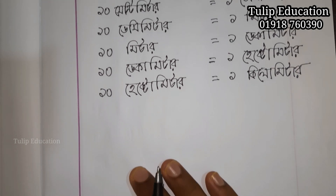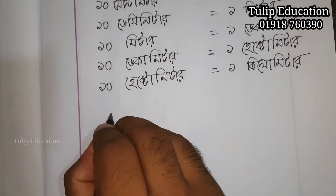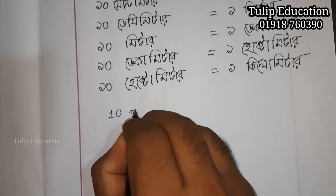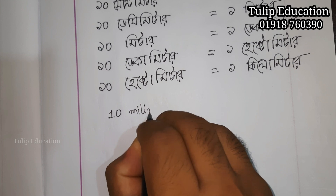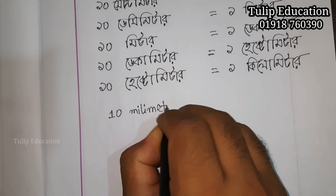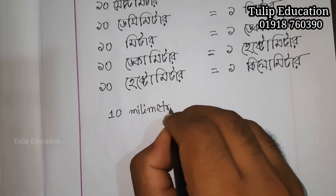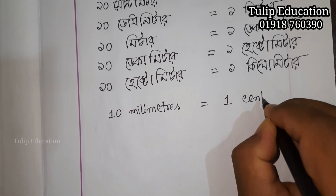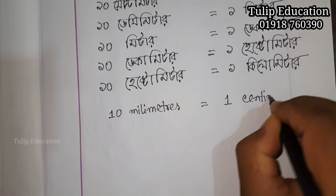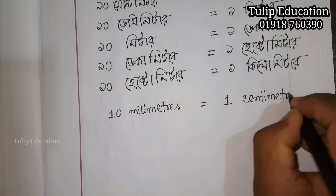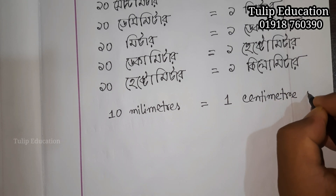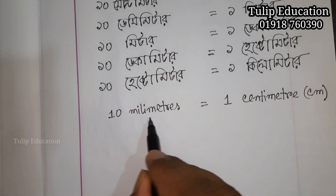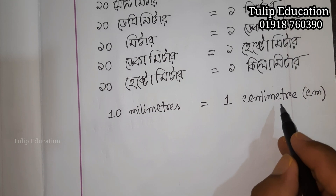Let me check in English. 10 mm equal 1 cm. Again, 10 mm equal 1 cm.